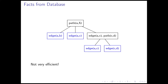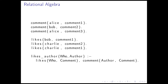We can now start thinking about how we can write down usual database queries in our logic programming framework. For example, a simple join. We have here two tables: one is a table of comments with columns username and the comment itself, and the second table contains likes — users can like comments. We are interested in which users liked which authors. So this is a join of the table of comment and like. We define this rule likes_author with variables who and author, saying who likes which comments and the comments should be authored by author.